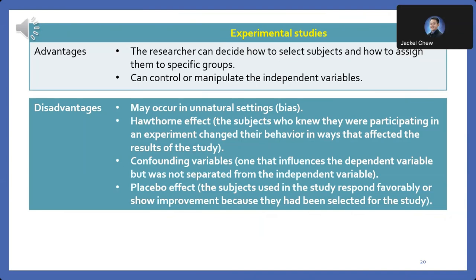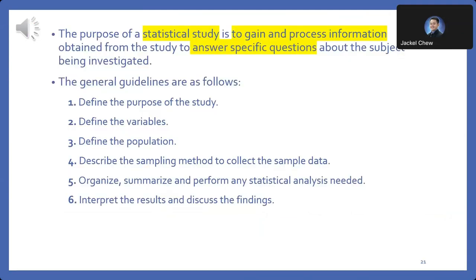By understanding the advantages and disadvantages of both observational and experimental studies, researchers can choose the appropriate study, ensuring robust and reliable results. Now, we're discussing the purpose and guidelines of a statistical study. The purpose of a statistical study is to gain and process information obtained from the study to answer specific questions about the subject being investigated.